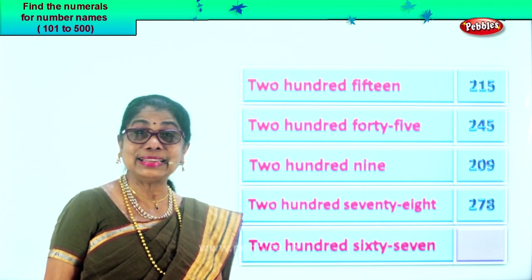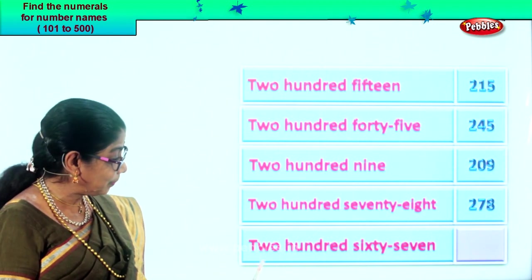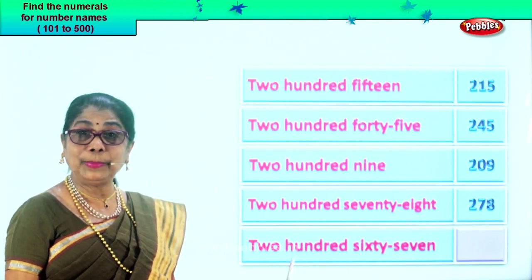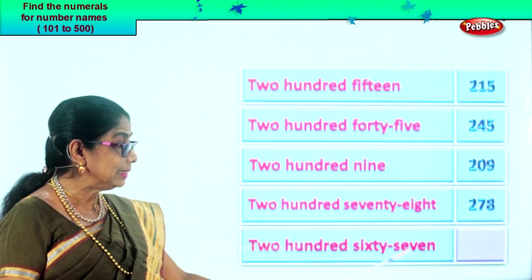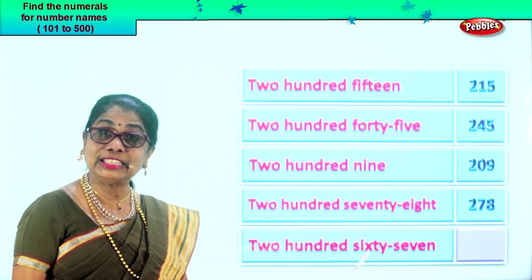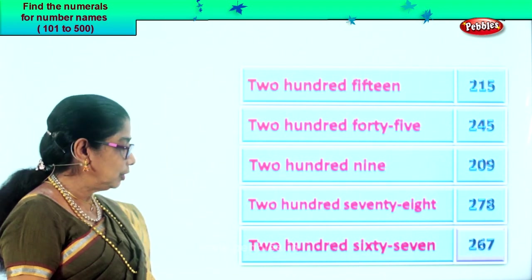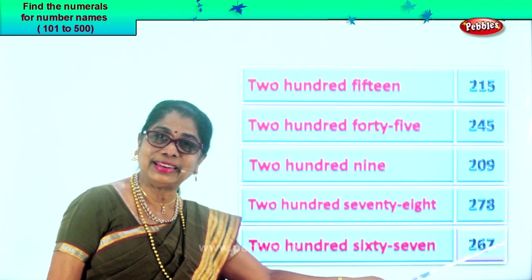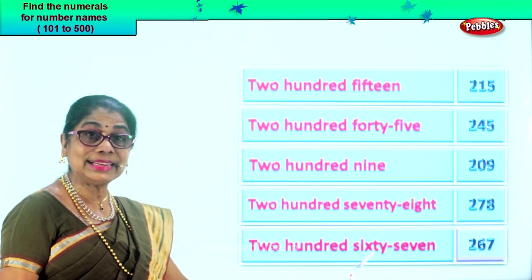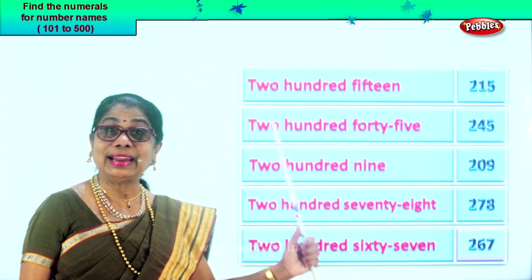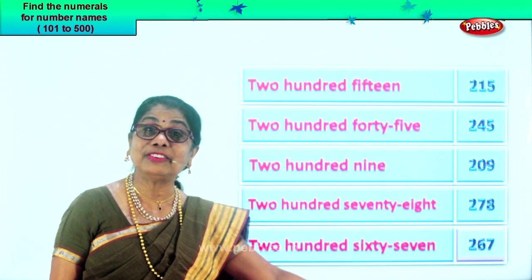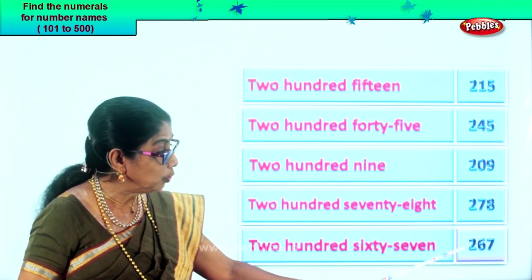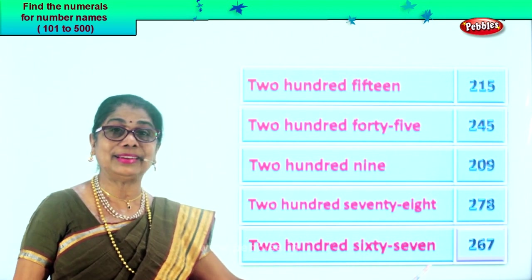Let's look at the last number name and get the numeral ourselves. Here you have two hundred sixty-seven. Two in the hundredth place. Sixty-seven — six in the tens place, seven in the ones place. Two, six, seven. Two hundred sixty-seven. Do you enjoy reading the number name and filling in the correct numeral? You read the numeral and the number name the same way. Two hundred sixty-seven.